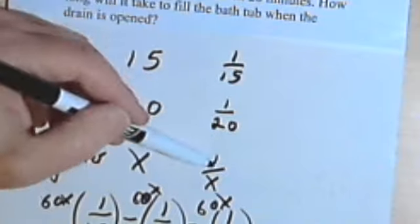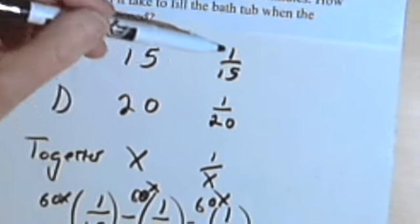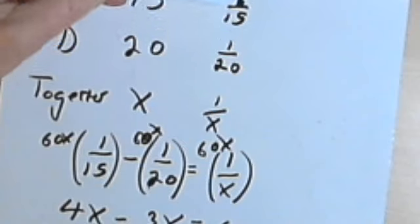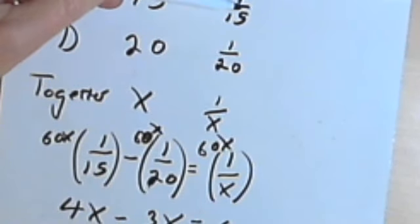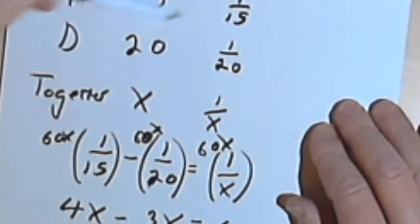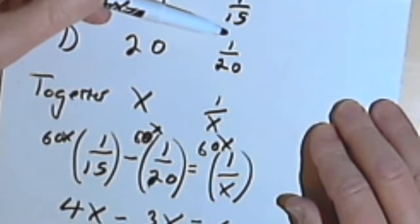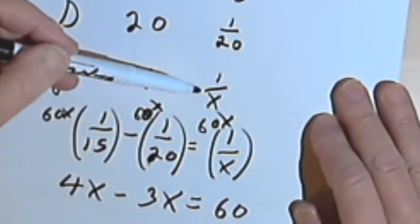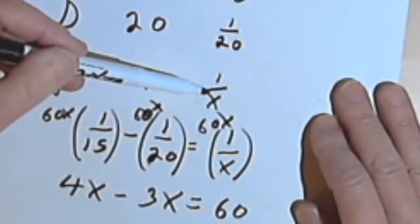So the basic procedure in doing all of this is write down the times that it takes for each of the participants. In other words, Ann and Bill and working together, or the faucet and the drain and working together. And then take the reciprocal of each one of those times. And then you're going to take the individual parts, the reciprocals of the individual times, and combine them and set them equal to the reciprocal of the time that they take working together.